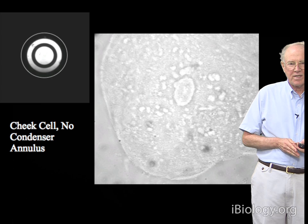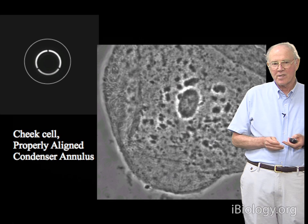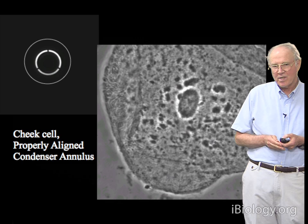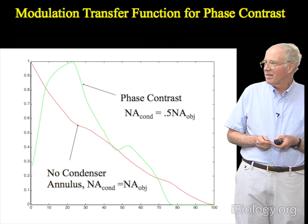Here we have no phase annulus at all, which gives our bright field image. Here we have a misaligned annulus, producing an ugly picture. And now we have an aligned annulus and we get a really nice picture. Once you get phase contrast lined up on the microscope, you usually don't have to ever change the alignment — you just simply switch the objectives and switch the turrets, making sure that everything is lined up and matched.